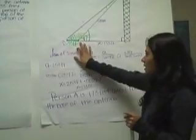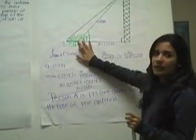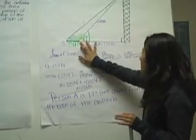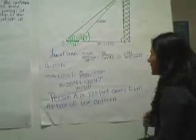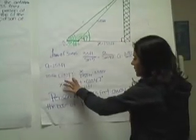So from there, we have to find what the question is asking for from point A, which is the first person to the antenna. So from there, we're going to do cosine of 47 degrees,